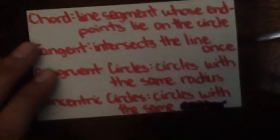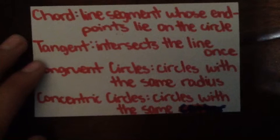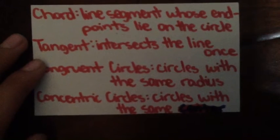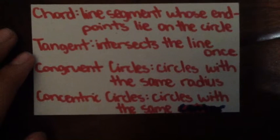A chord is a line segment whose endpoints lie on the circle. A tangent intersects the line once. Congruent circles are circles with the same radius. Concentric circles are circles with the same center.